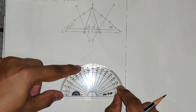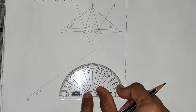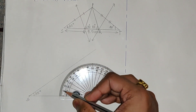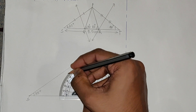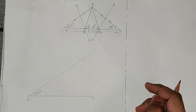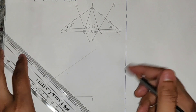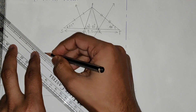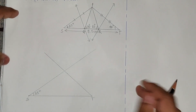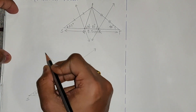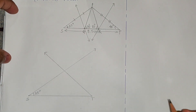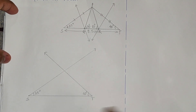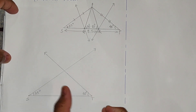Keep the protractor at T and align it perfectly with the line. Since the line moves towards the left, start from 0 on the right side — 10, 20, 30, 40. Mark 40 degrees and draw the line. So we have constructed 35° at S and 40° at T. Now we have to take the perpendicular bisector of these two sides.